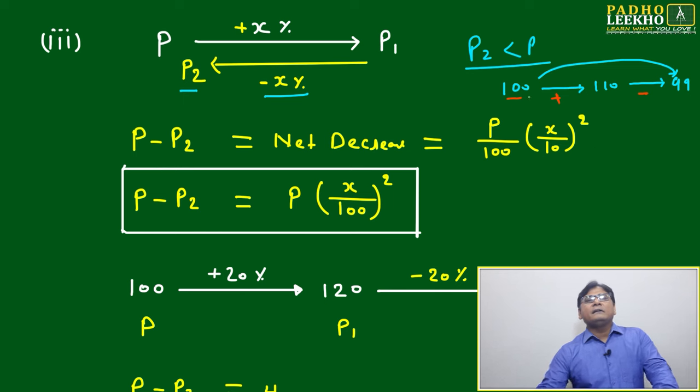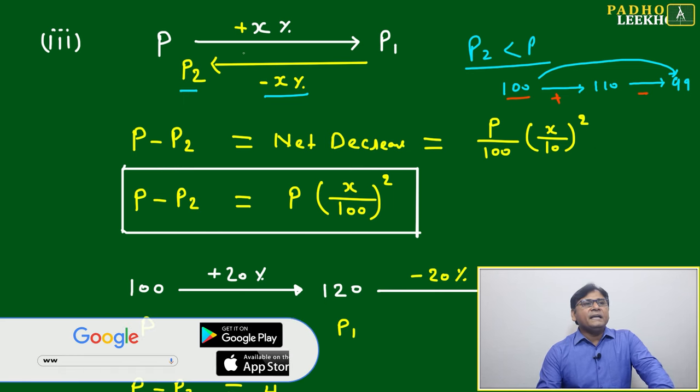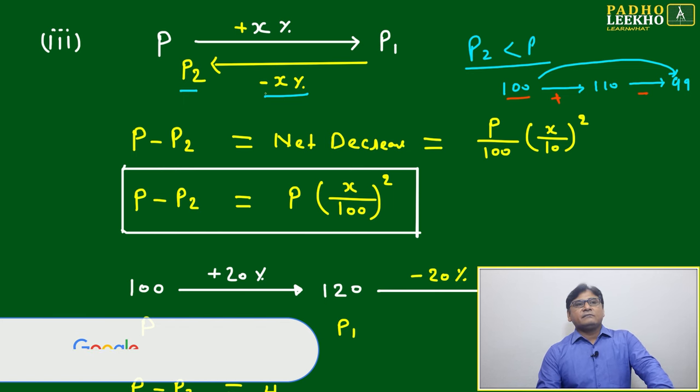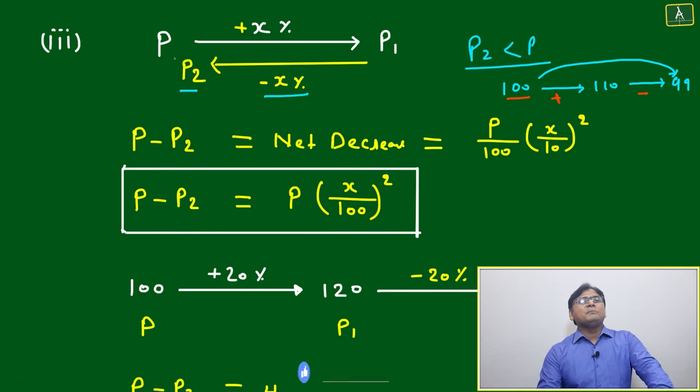Same way P, you are just increased by x percent. Again you are coming back, we are reducing the 10 percent, then x percent, then P2 you will get. P2 will be always less than P.